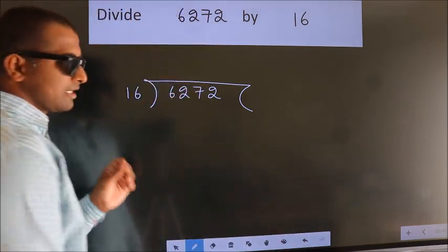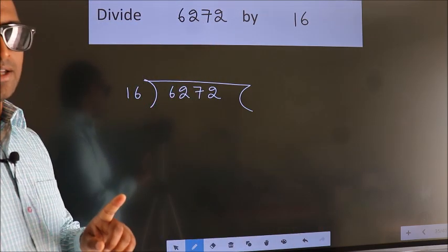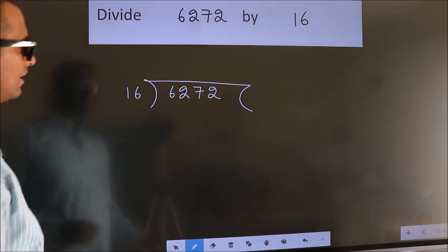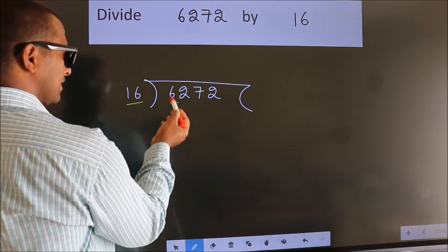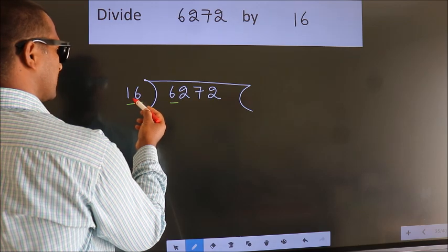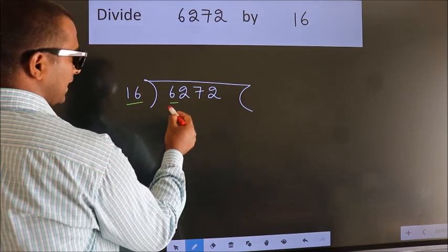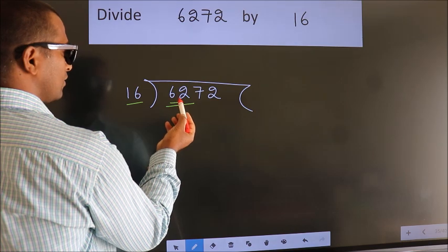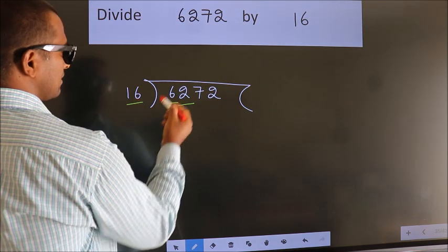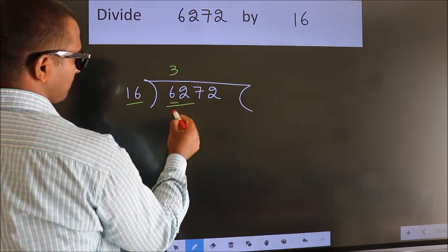This is your step 1. Next, here we have 6. Here 16. 6 smaller than 16. So, we should take two numbers, 62. A number close to 62 in 16 table is 16 threes, 48.